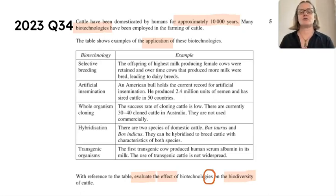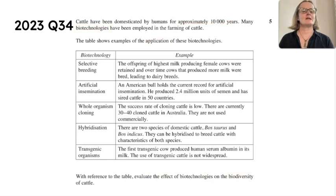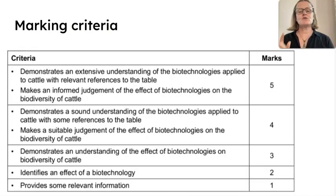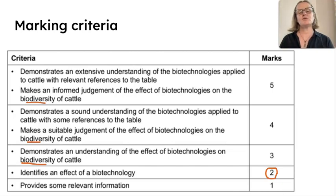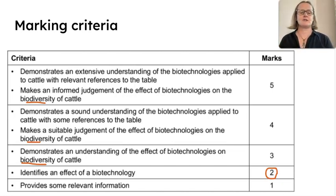What's quite interesting with this question: when we look at the marking criteria, if you don't talk about biodiversity — and the word biodiversity appears repeatedly in the criteria — you are down at a two. So make sure you are answering the question that has been posed and not going off on a tangent about biotechnologies that aren't connected to biodiversity.